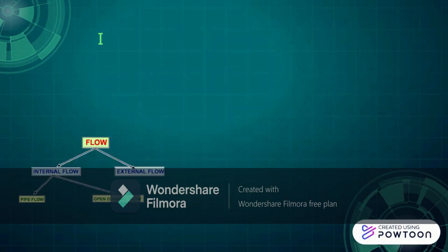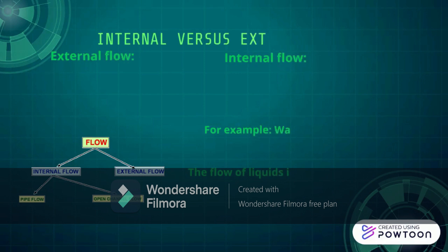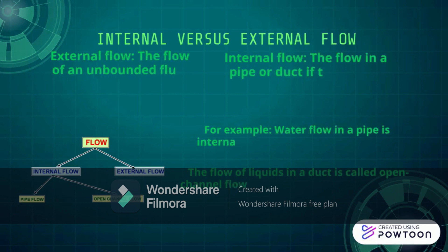Internal versus external flow. A fluid flow is classified as being internal or external depending on whether the fluid flows in a confined space or over a surface. External flow is the flow of an unbounded fluid over a surface such as a plate, a wire, or a pipe. Internal flow is the flow in a pipe or duct where the fluid is completely bounded by solid surfaces.